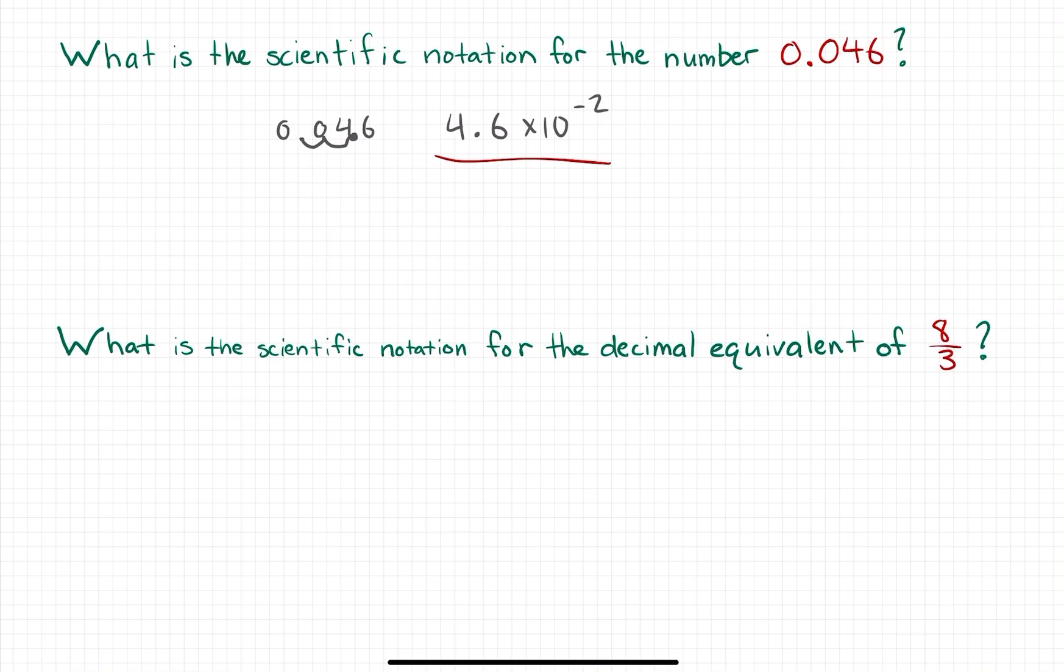I'm gonna take the numerator 8 and divide it by the denominator 3. Now of course, 3 goes into 8 two times, and 3 times 2 gives us 6. So if I take the difference between 8 and 6, I get 2. If I put a decimal here after the 2 and drop down another 0 as division goes, I'll have 20 here on the bottom.